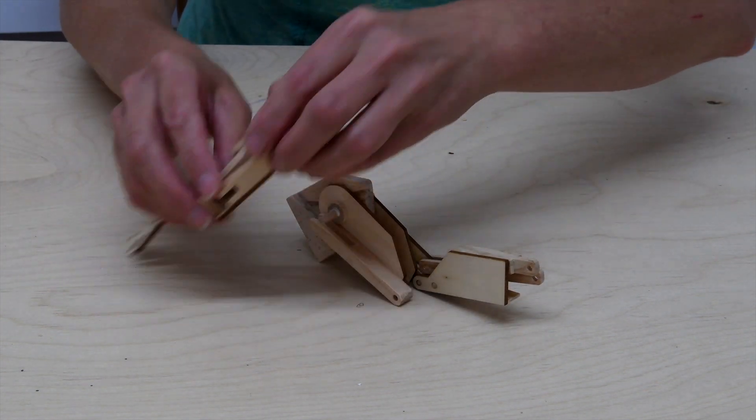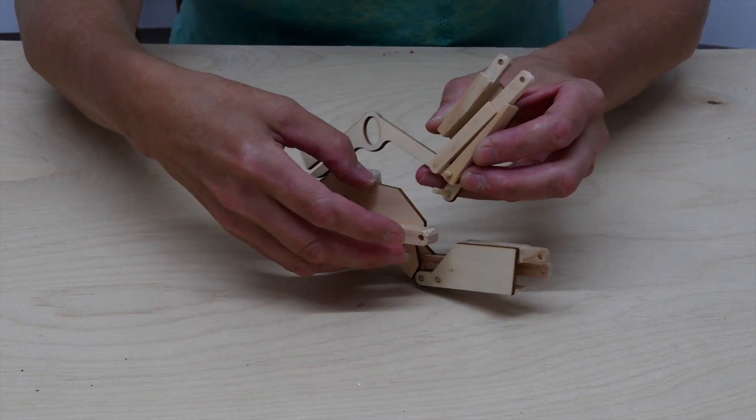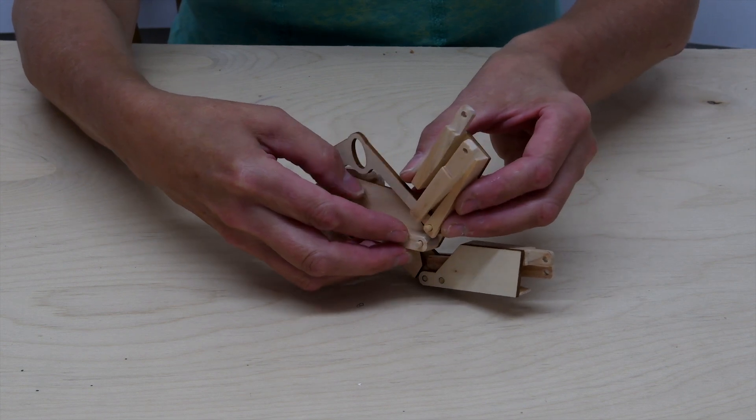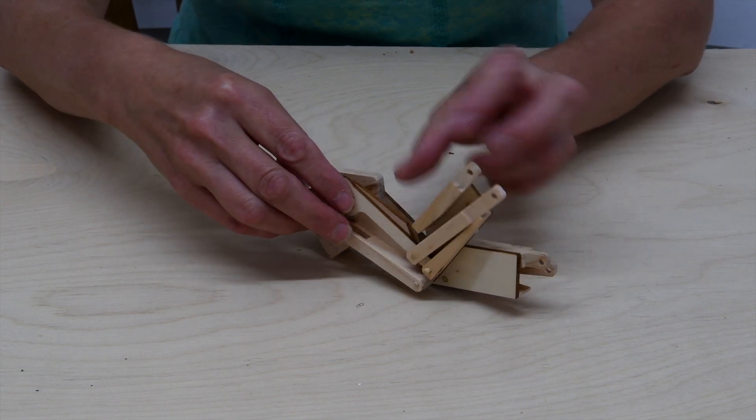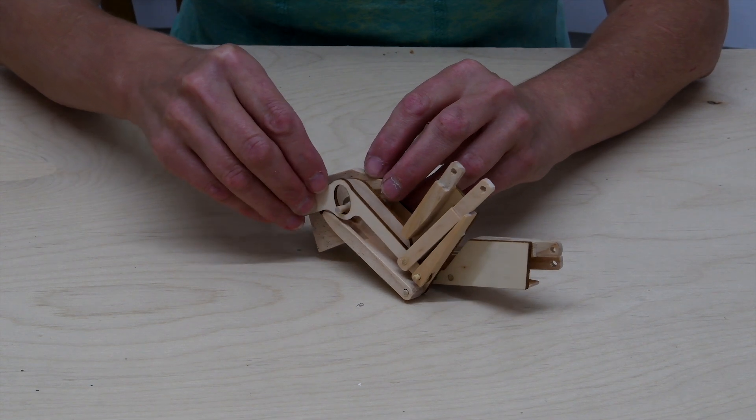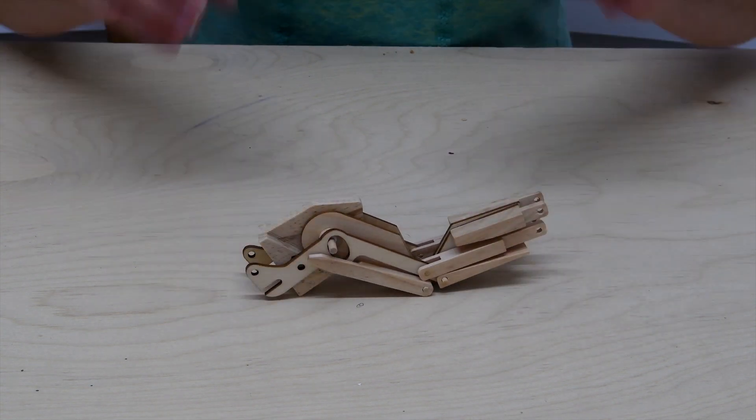Same on the other side. Lift this leg up, put that peg through, and then guide that peg through the hole. And drop down.